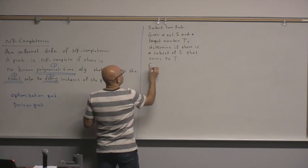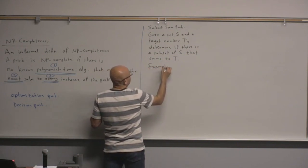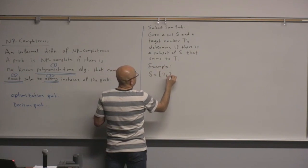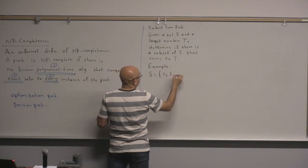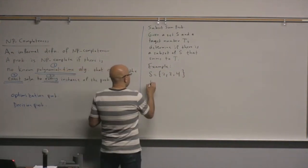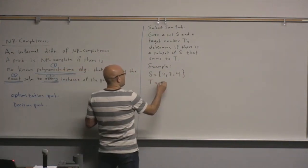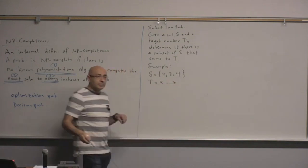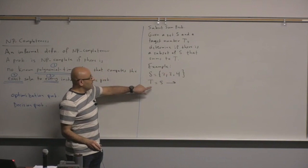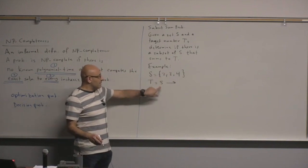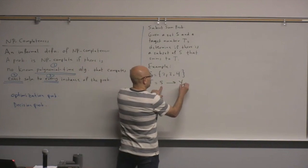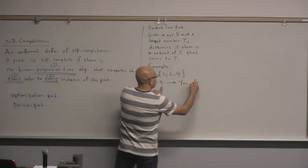For example, S equals {2, 3, 4}. If T equals 5, the question is: is there a subset of this set with sum 5? Clearly there is one, so the answer is yes. The subset is {2, 3}.